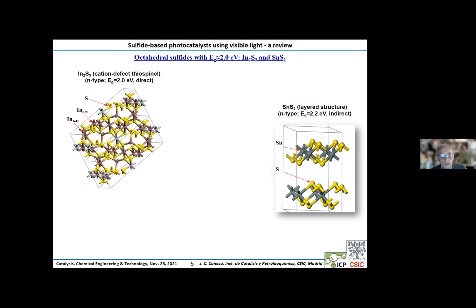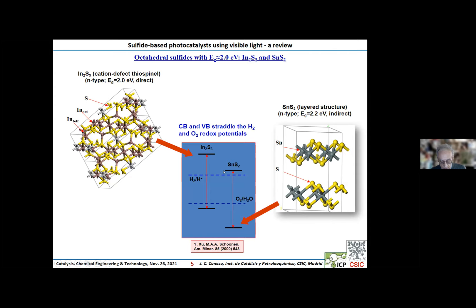Let's turn now to indium sulfide, which has a three-dimensional cation defect structure with a direct band gap of 2.0 eV, and tin disulfide, which has a layered structure with an indirect band gap of 2.2 eV. One particularly interesting thing is that, according to the literature, both sulfides straddle the standard redox potentials of hydrogen and oxygen evolution from water, which makes them particularly good candidates for those processes.